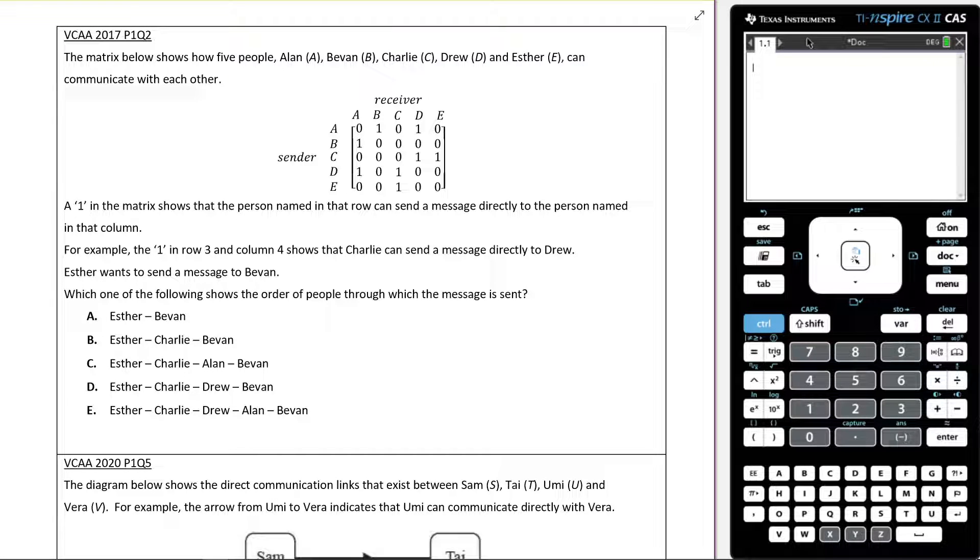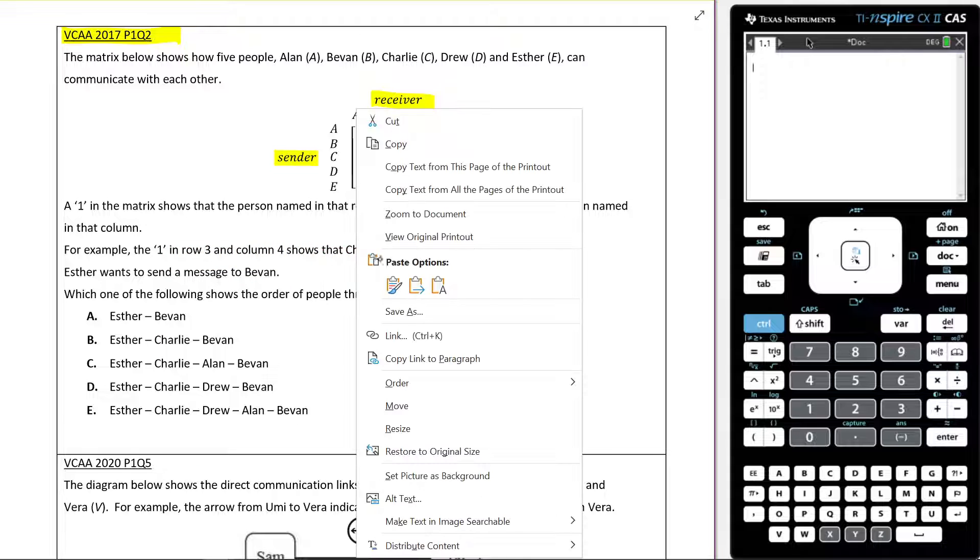Okay, let's answer this question from VCE 2017 Paper 1, Question 2. The matrix below shows how five people - Alan, Bevan, Charlie, Drew, and Esther - can communicate with each other. This is the sender, this is the receiver. A one in the matrix shows that the person named in the row can send a message directly to the person named in that column. For example, the one in row three, column four shows that Charlie can send a message directly to Drew.